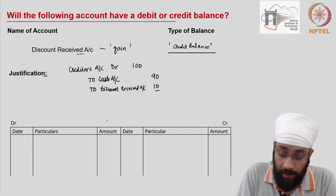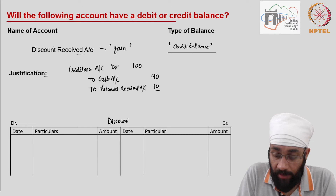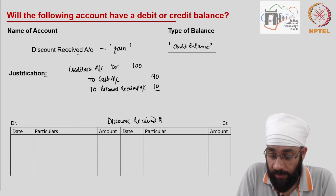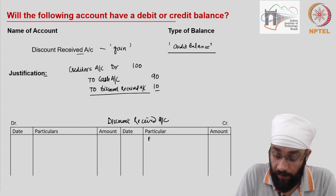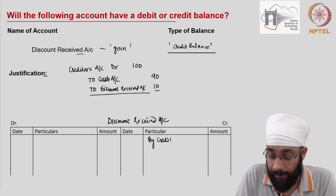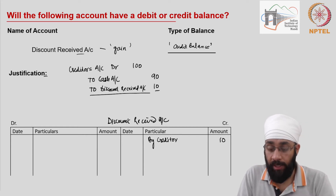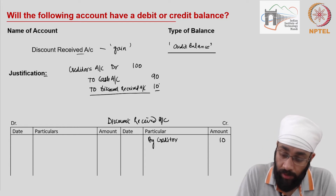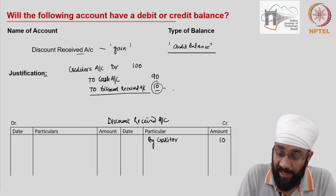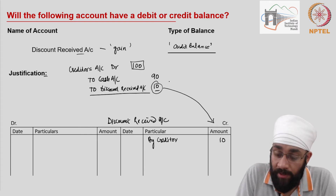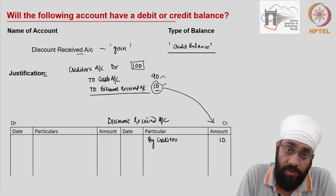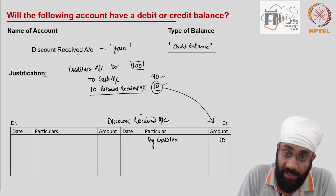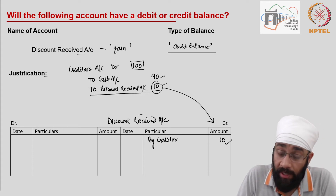When you prepare the discount received account, it is being credited. You go to the credit side and write 'by creditor' with an amount of 10. The 100 is divided into two parts: 90 goes to cash account and 10 goes to discount received account. So discount received is only 10, and you should only show 10 here.